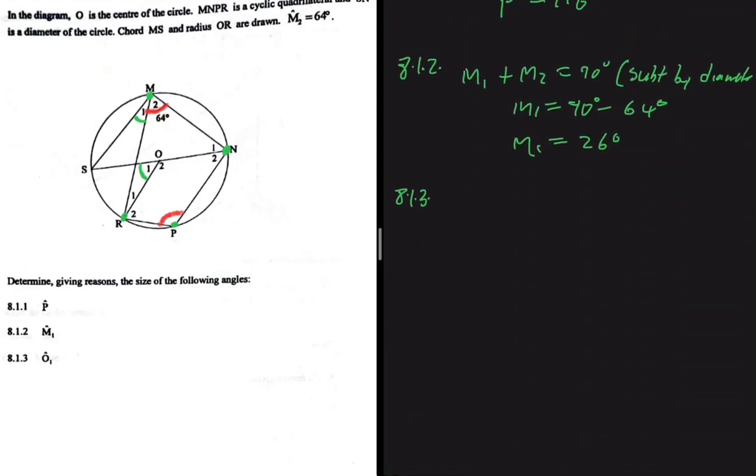We're saying that O1 here should be twice M1, because an angle at the center of the circle is twice the angle at the circumference if they are from the same arc.